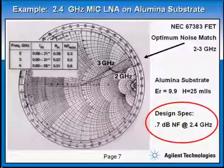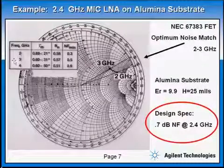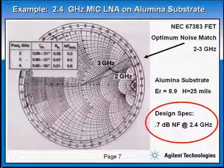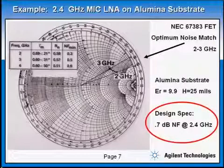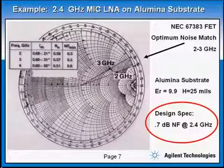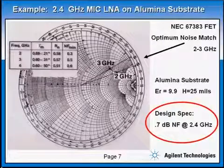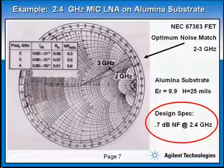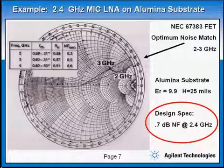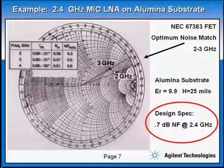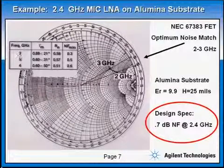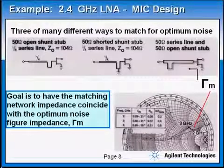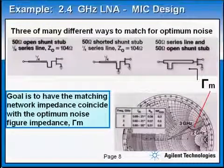To start the design, I got from the vendor the optimum noise match parameters from 2 to 4 gigahertz. I plotted them on the Smith chart from 2 to 3 gigahertz. My task was to come up with an input matching network that would take me to this locus of points to give me the optimum noise figure — hopefully achieving 0.5 dB at 2.4 gigahertz. This is not a wideband structure, so you can match it with two elements: a series line with an open stub, or a shorted stub, quarter wavelength, or open stub quarter wavelength, among other possibilities.